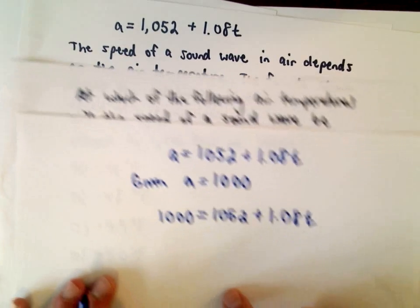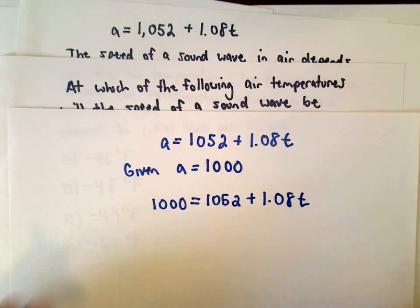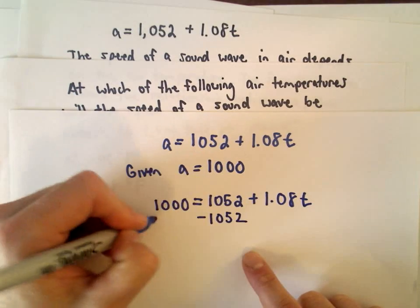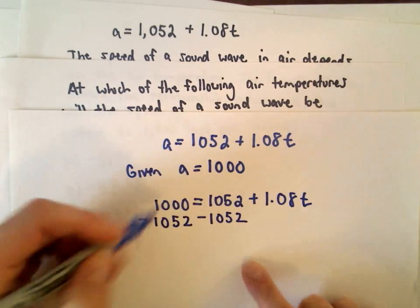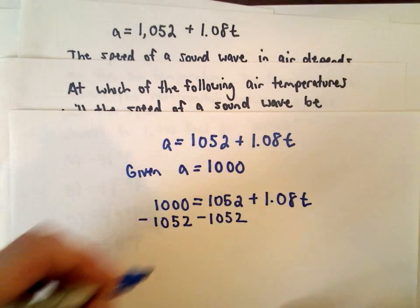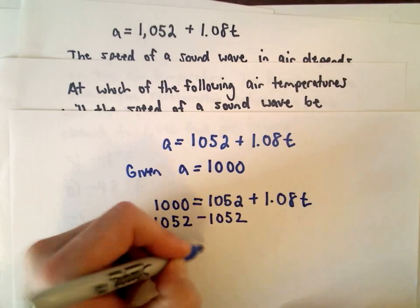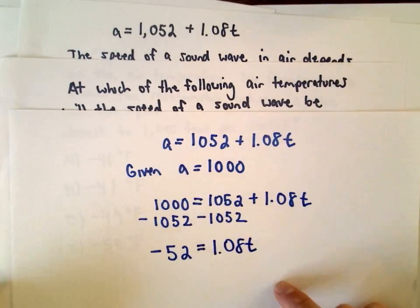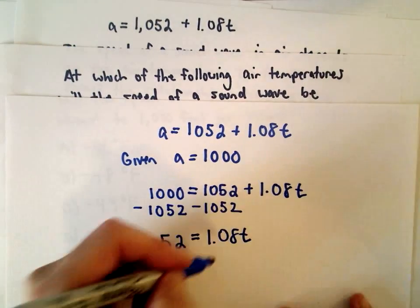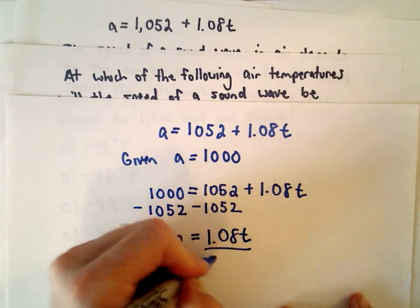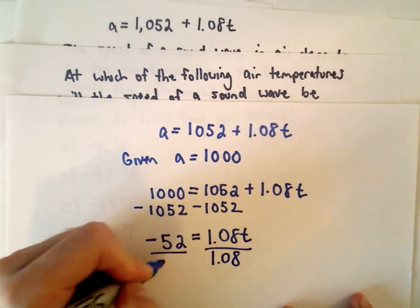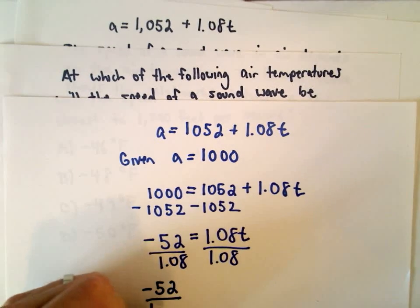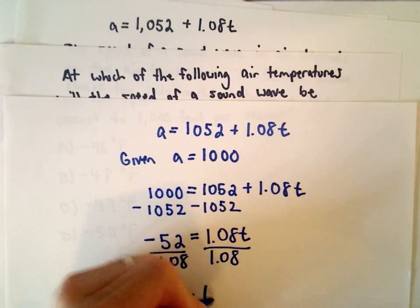And now we just have to take this equation and simply solve for t. So the first thing I'm going to do is subtract 1,052 from both sides. 1,000 minus 1,052 will be negative 52. And on the right side, we'll be left with 1.08 multiplied by t. And now we'll just divide both sides by 1.08. So on the left side, we'll have negative 52 divided by 1.08. That's going to equal t.